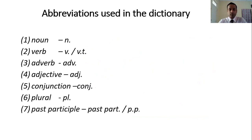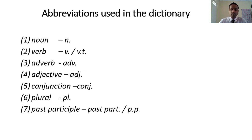You also need to be thorough with the abbreviations used in a dictionary. For example, in some dictionaries the noun is indicated by the letter 'n'. Like that, verbs, adverbs, adjectives, conjunctions, plural — there are several abbreviations for word classes shown in a dictionary.